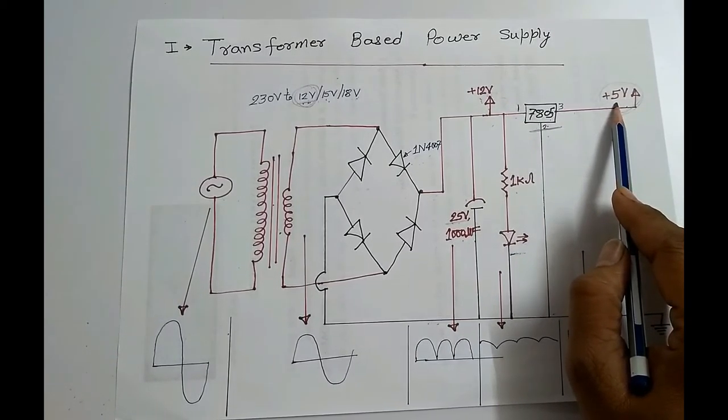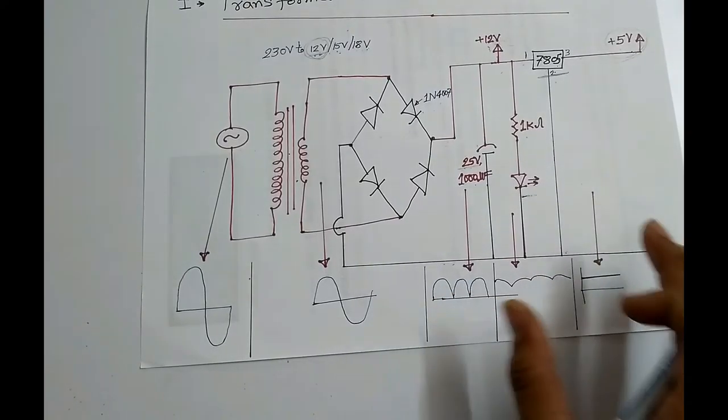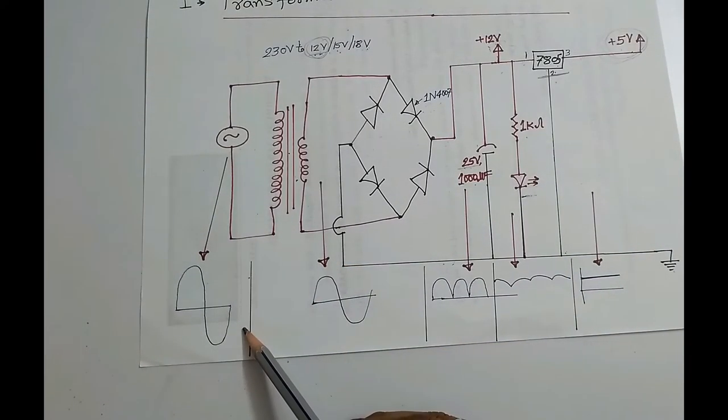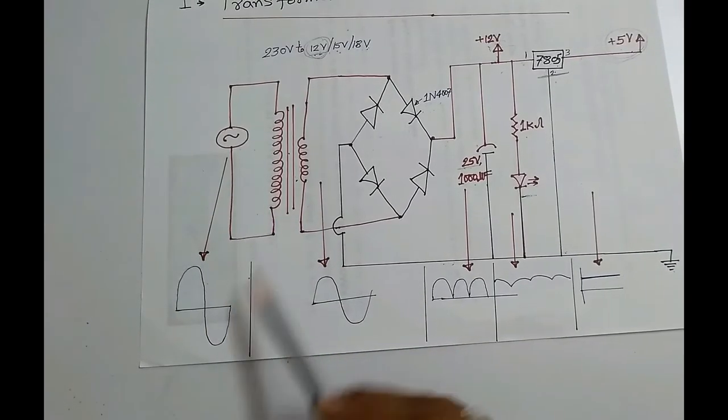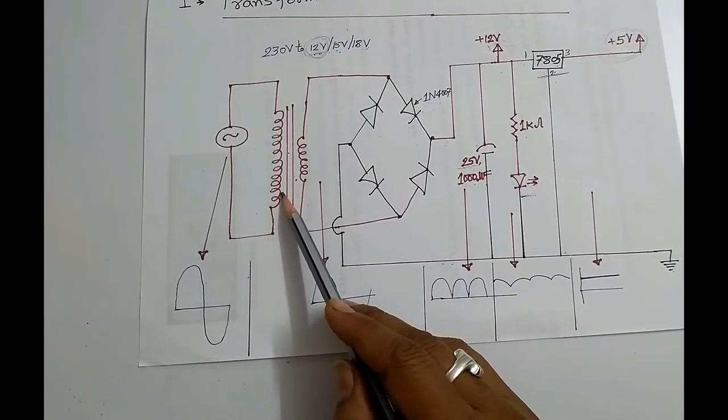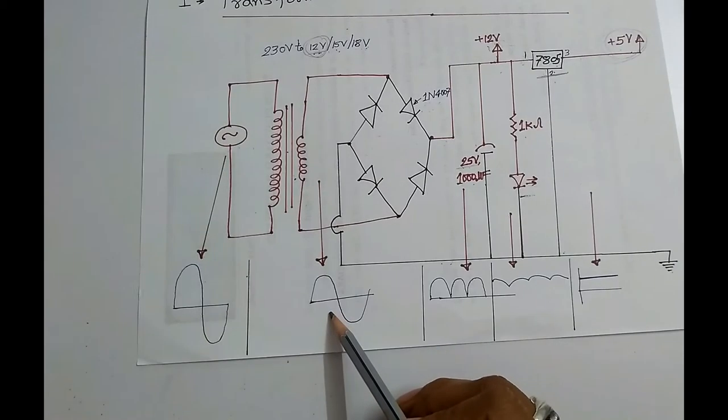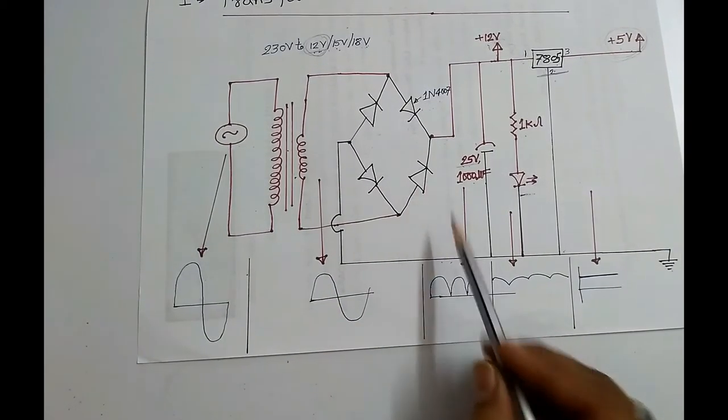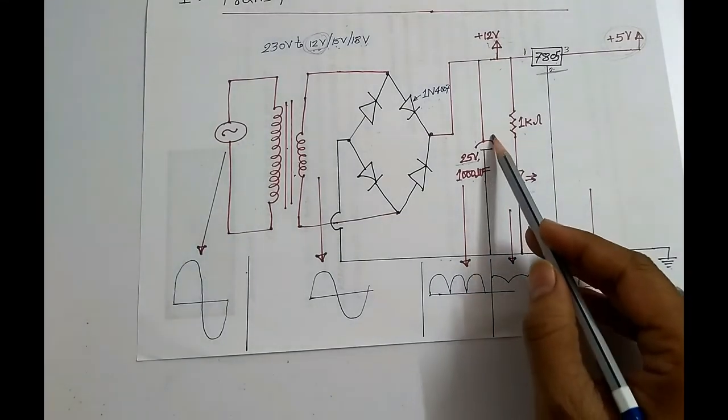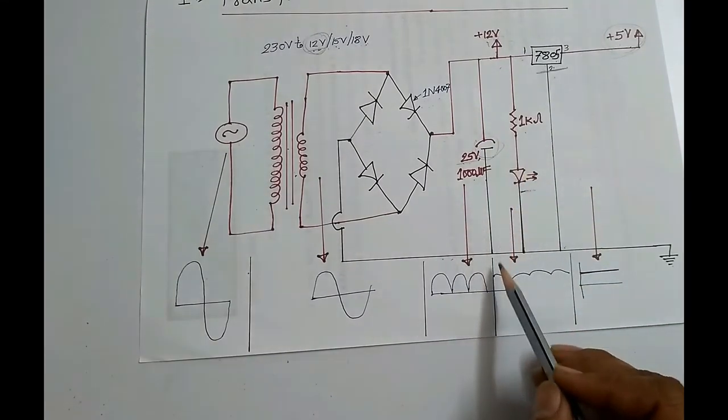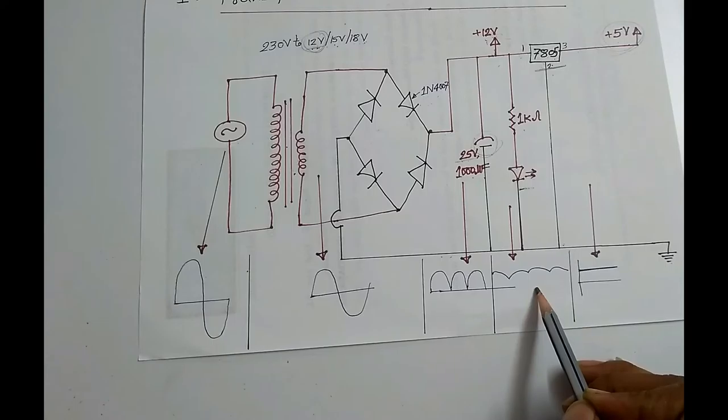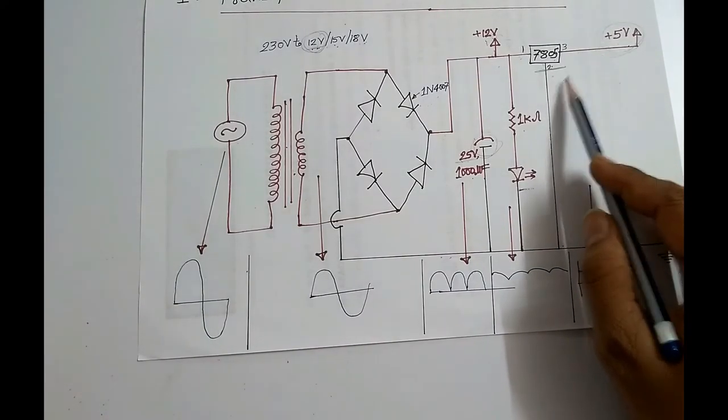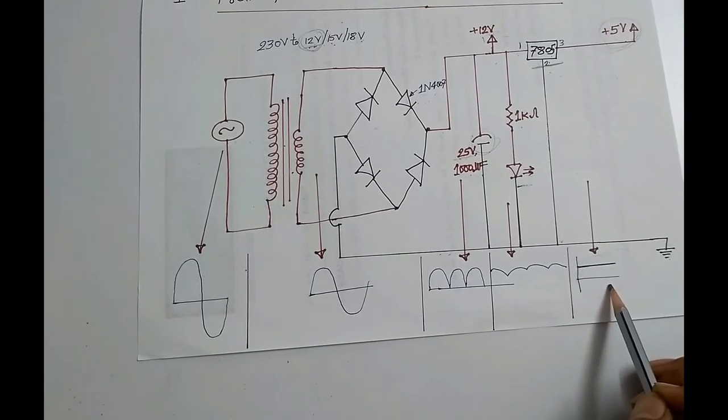Now I am talking about waveform. Here this waveform is of main AC supply. After step-down transformer this waveform is changed with amplitude. After rectifier we get pulsating DC. By using this capacitor we get some smooth DC as compared to previous. And finally after 7805 IC we get pure 5V DC waveform.